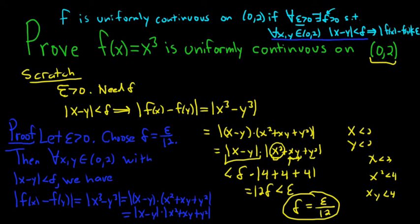We know that the absolute value of x minus y is less than delta, so this is less than delta. And we know that this second quantity here is less than 12, right? This is times 12.